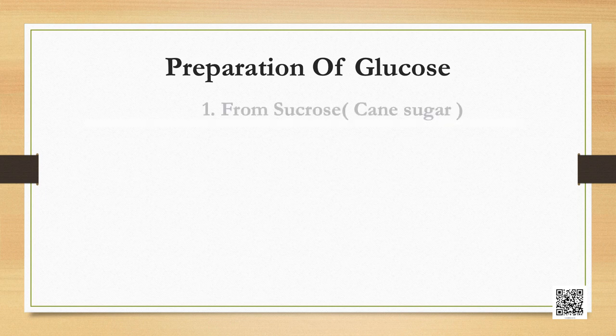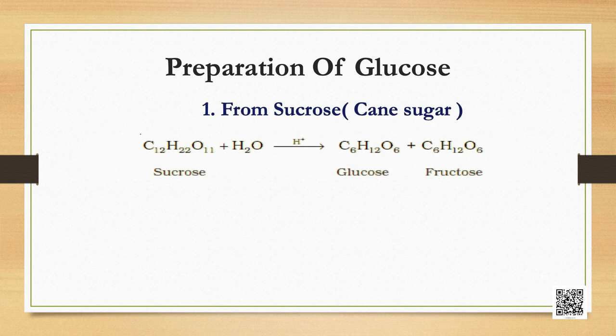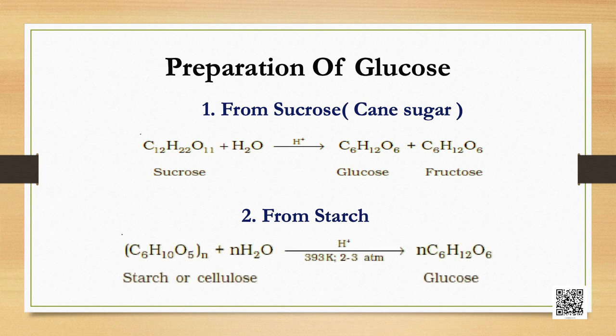Glucose occurs freely in nature as well as in combined form; it is present in sweet fruits and honey. Preparation of glucose: first, if sucrose is boiled with dilute hydrochloric acid or sulphuric acid in alcoholic solution, glucose and fructose are obtained in equal amounts. Commercially, glucose is obtained by hydrolysis of starch by boiling it with dilute sulphuric acid at 393 K under pressure.